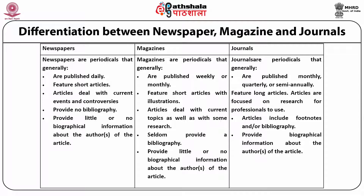As for journals, they are very academic and research oriented. You have both national and international journals, available in print or online — in some cases only online, in some cases both. Popular journals in the social science area include Economic and Political Weekly, Sociological Bulletin, and various international journals on different thematic areas.